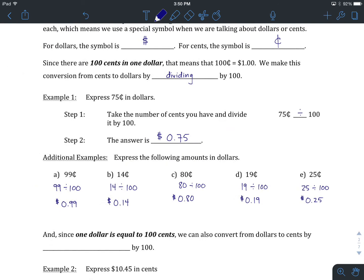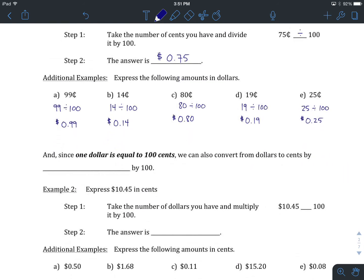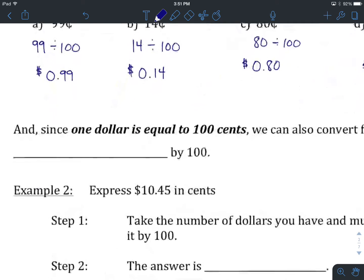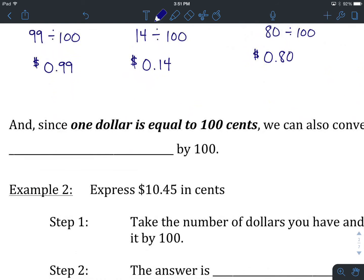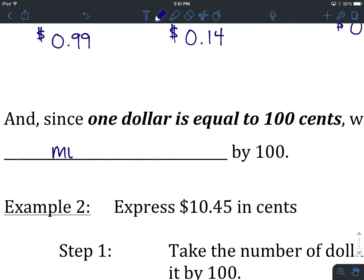So that's converting from cents to dollars. We can just as easily go in the other direction. If we're given an amount in dollars and asked to express it in cents, we perform the opposite operation. We do that by taking whatever amount we've been given in dollars and moving it to cents by multiplying by 100.